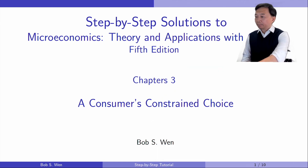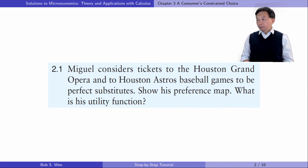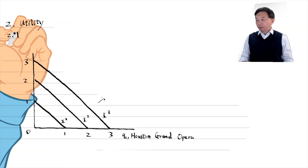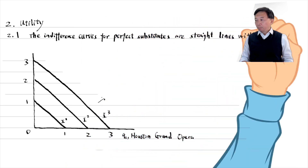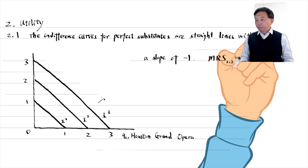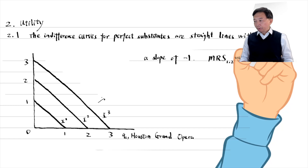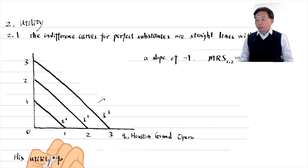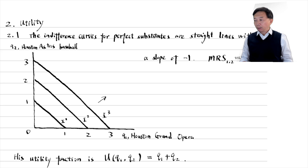Let's look at exercise 2.1. The consumer considers tickets to the Houston Grand Opera and to Houston Astros baseball games to be perfect substitutes. Show his preference map. What is his utility function? The indifference curves for perfect substitutes are straight lines with a slope of minus one. The marginal rate of substitution is minus one, meaning he is willing to exchange one ticket to the opera for one ticket to the baseball game. His preference map is a set of parallel straight lines. His utility function that is consistent with the straight line indifference curves is Q1 plus Q2.